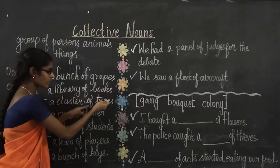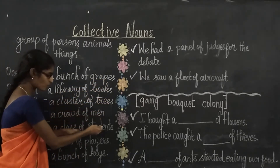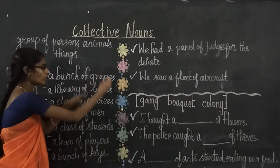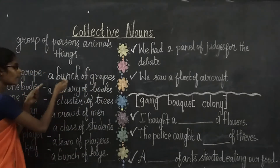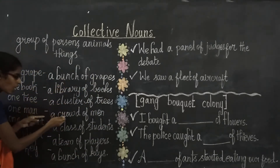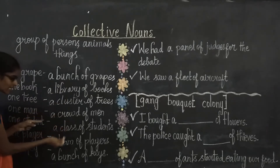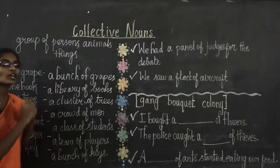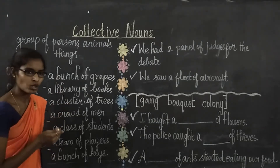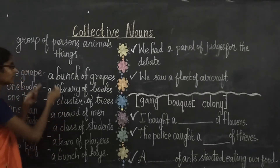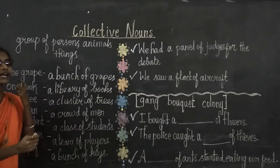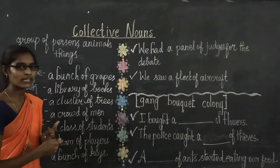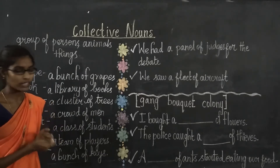So the nouns are: grapes, books, trees, men, students, players, keys — all are nouns. And the group names are: bunch, library, cluster, crowd, class, team, bunch. Together these are called collective nouns.